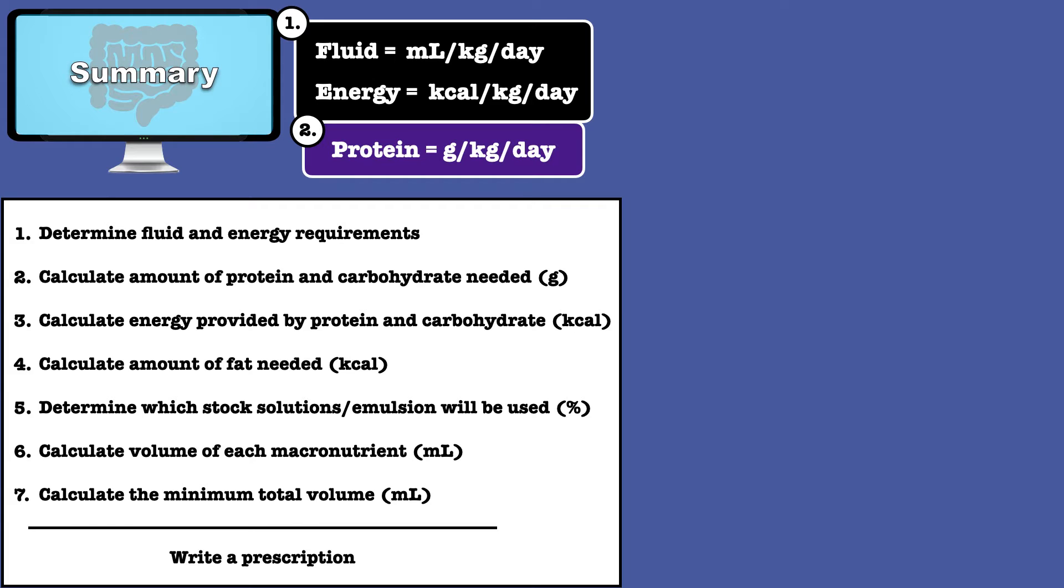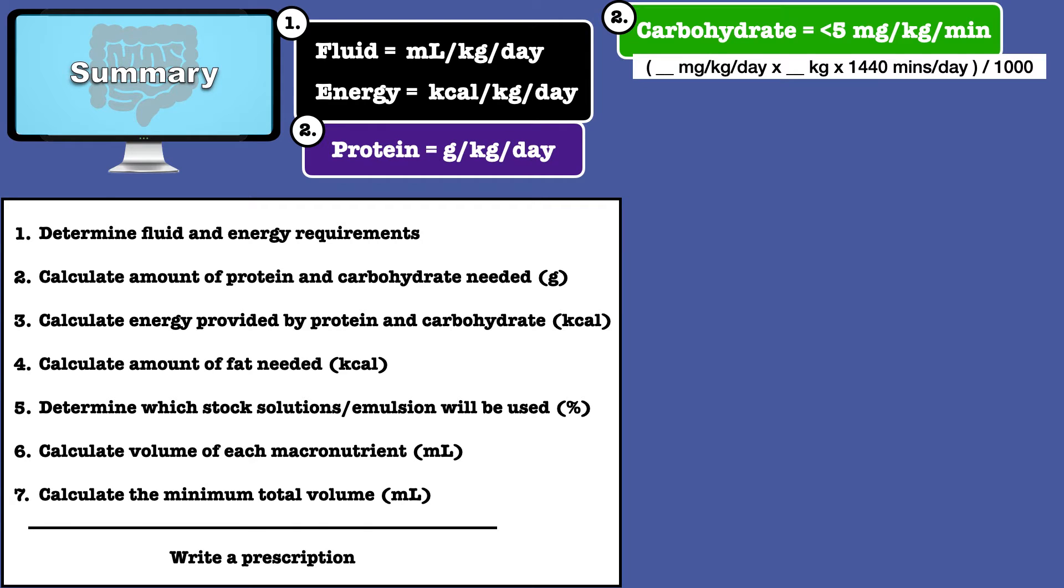For protein, you should use grams per kilogram per day. Carbohydrate needs are different and can be guided with the glucose infusion rate in mind. As a general rule, you want to provide less than 5 milligrams per kilogram per minute.